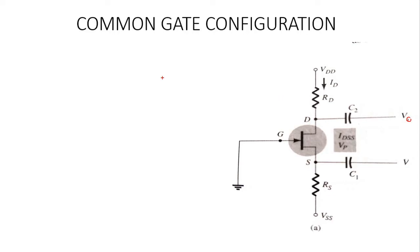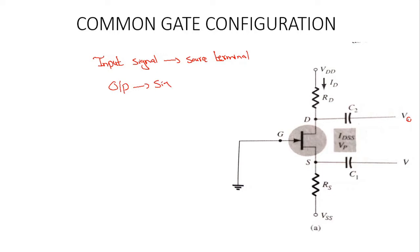So in the common gate configuration, the input signal is applied to the source terminal and the output signal is taken from the drain terminal.